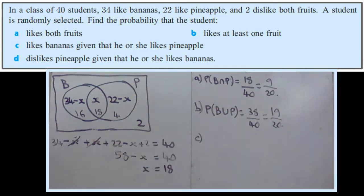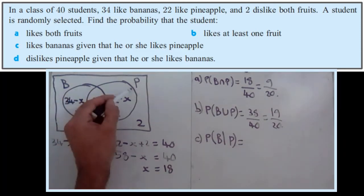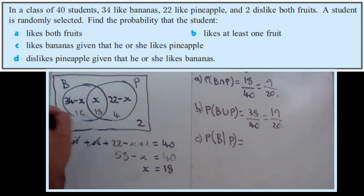Part C, now we're on to the conditional stuff. So, probability they like bananas given that they like pineapples. Probability bananas given pineapples. Now, using the Venn diagram, because you know a bit more information. So you know that this randomly selected student likes pineapples. You know that they're one of these students, so they came from this circle.